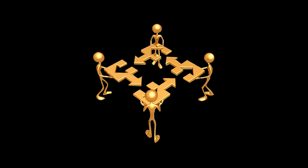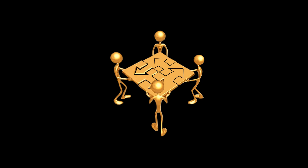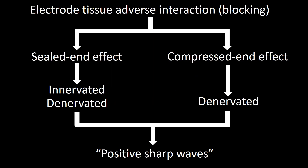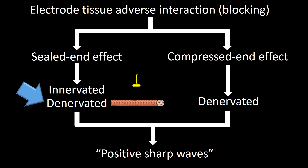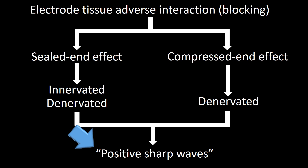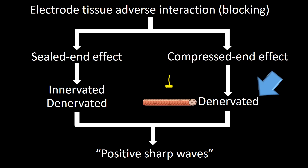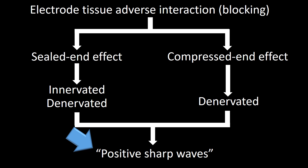I will use a few of the facts to build a simple table to help us navigate through our discussion. This table emphasizes that electrode-tissue adverse interaction produces blocking, that there are two types of blocking mechanisms, that sealed-N effect in innervated or denervated muscle fibers produces morphologically positive sharp waves, and that compressed-N effect only produces morphologically positive sharp waves when it involves denervated muscle fibers.